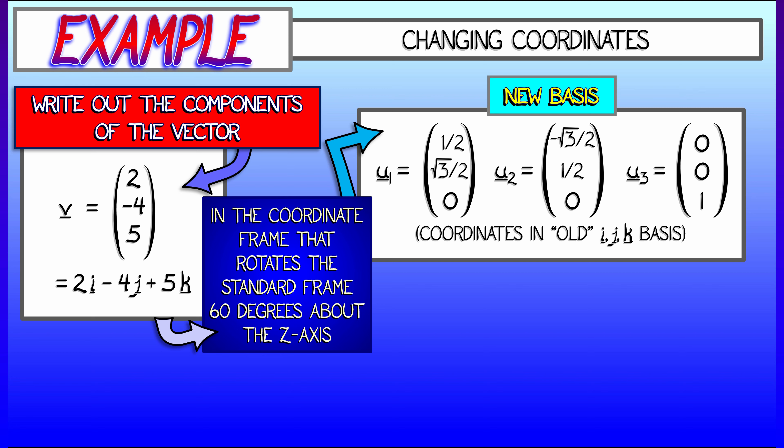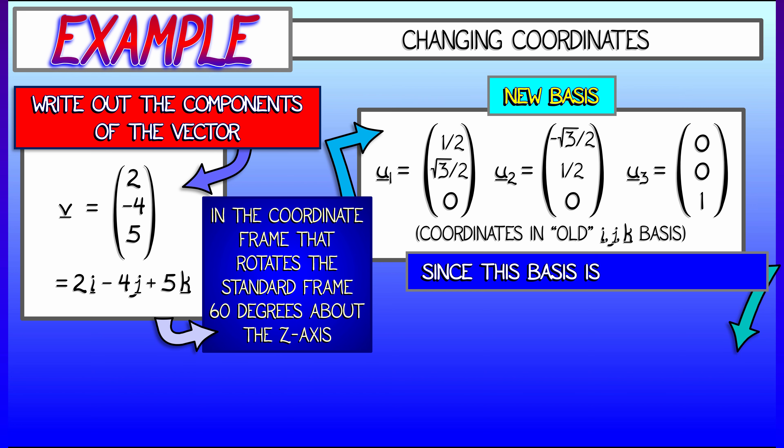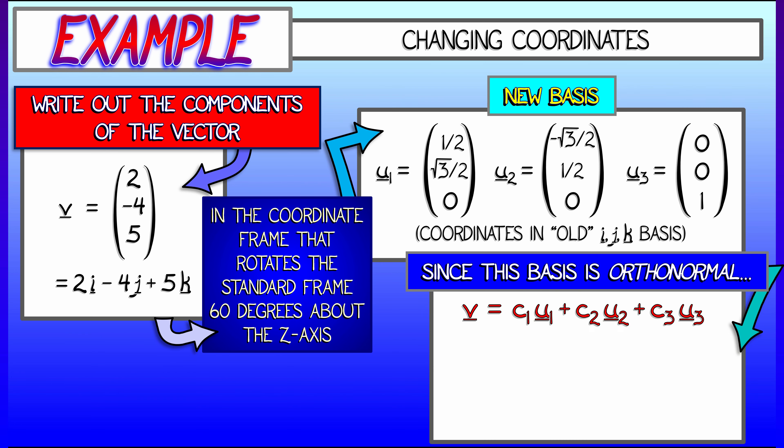Okay, now given those basis vectors in the old i, j, k system, I now want to take my vector v and rewrite it as a linear combination of the basis vectors. That is, v is c1 u1 plus c2 u2 plus c3 u3. What are the coordinates? What's c1, c2, c3? Just take the dot products, since it's an orthonormal basis.